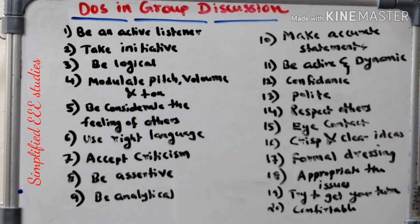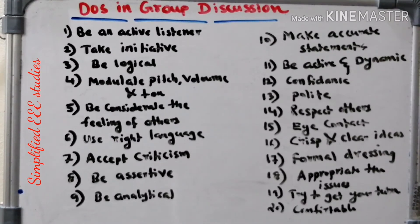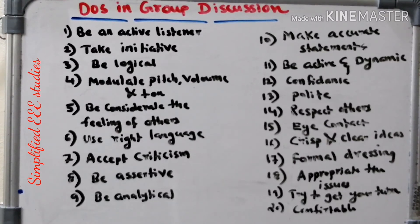You should show your confidence level — how confident you are about the topic. Be polite and acknowledge others; if someone makes a point, you can acknowledge that it is fine. You should be polite and respect others. Maintain good eye contact — that's also one of the main things in group discussion. Your ideas and views should be crisp and clear. Maintain formal dressing, which is another positive quality.